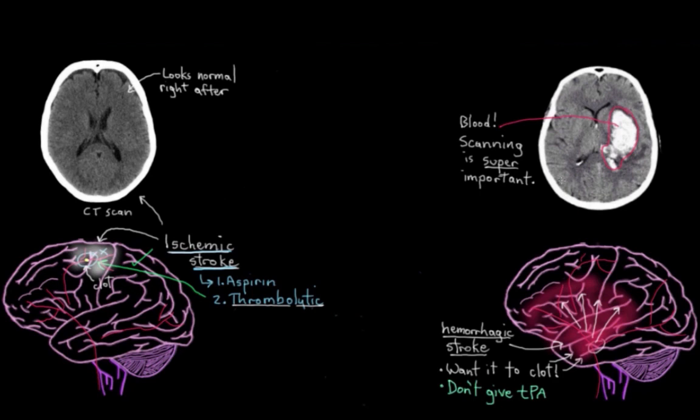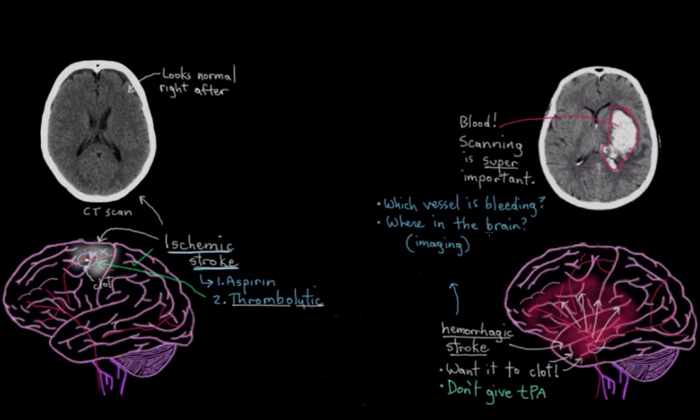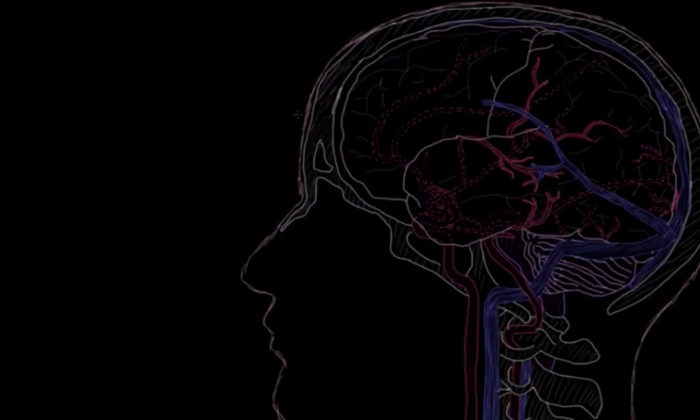So for hemorrhagic strokes, the focus of initial treatment has to be a little different than with ischemic strokes. So for example, with hemorrhagic strokes, it's really important to find out which blood vessel is bleeding. So where exactly in the brain the bleed is. And that can be done by the imaging tests like CT or MRI or angiography that we talked about. Because the goal is to stop the bleed. So it's important to first know where it is.